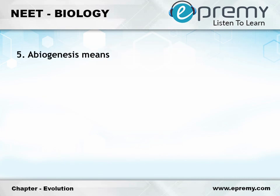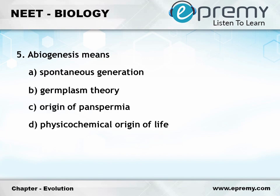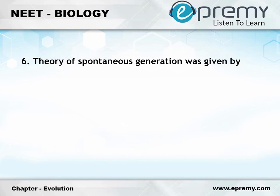Question number 5: Abiogenesis means. Option A: Spontaneous generation. Option B: Germplasm theory. Option C: Origin of panspermia. Option D: Physicochemical origin of life. And the answer is Option A: Spontaneous generation.